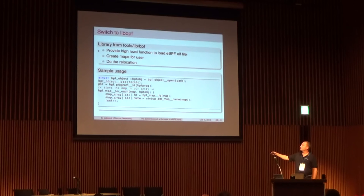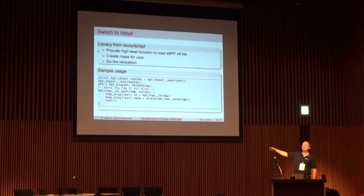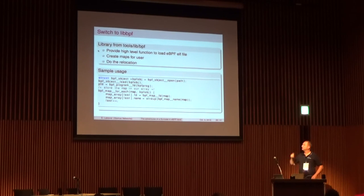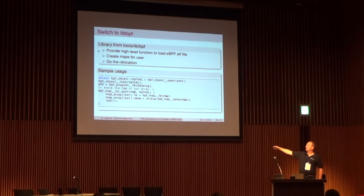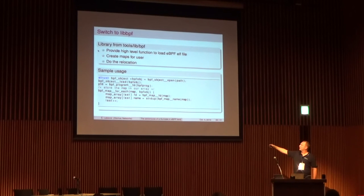The usage of libbpf is quite simple. You do bpf_object__open to open the ELF file directly, then get the BPF object and load it into the kernel. Then you get the file descriptor that you pass to setsockopt to use as a filter. You also get useful map functions like looping over every map — I loop on every map, get the file descriptor and the map name, then store the map inside Suricata for later usage.